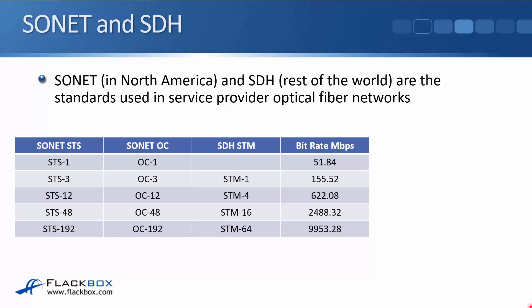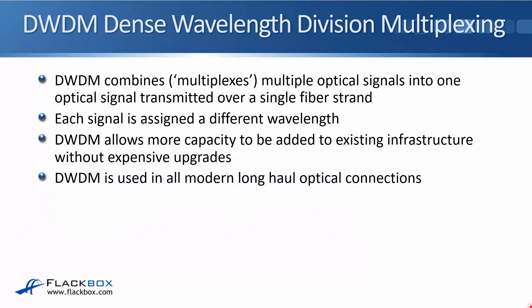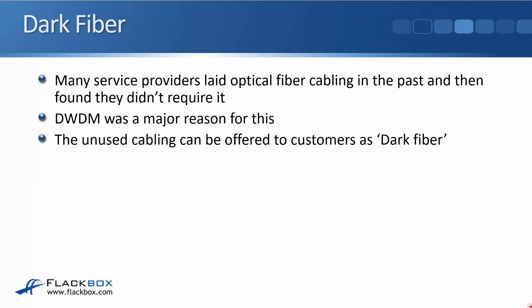DWDM is dense wavelength division multiplexing. It combines or multiplexes multiple optical signals into one optical signal transmitted over a single fiber strand. The way it does the multiplexing is that each signal is assigned a different wavelength. Because you've got multiple signals that would normally require different fiber strands, that allows more capacity and bandwidth to be added to existing infrastructure without requiring expensive upgrades. DWDM is used in all modern long-haul optical connections in service providers. Many service providers laid optical fiber cabling in the past and then found they didn't actually need it, and DWDM was a major reason for this because it provided much more bandwidth with much less actual cabling.